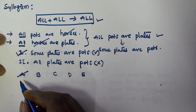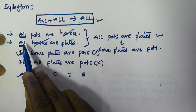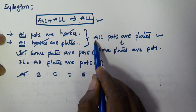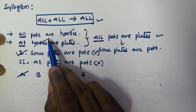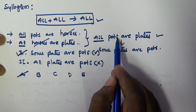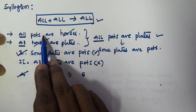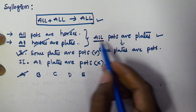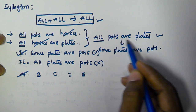To recap: both syllogisms start with 'all,' so the conclusion we derive also starts with 'all.' The predicate of the first syllogism is equal to the subject of the second syllogism, so we cancel both of them. We take the subject of the first syllogism as the subject of the conclusion and the predicate of the second syllogism as the predicate of the conclusion.